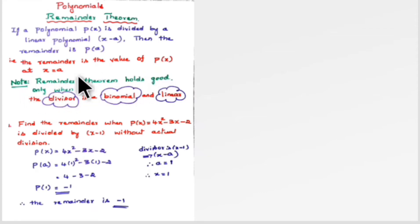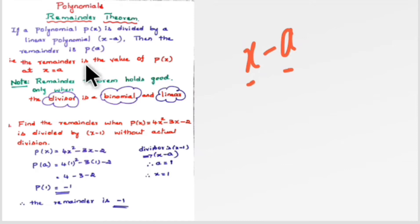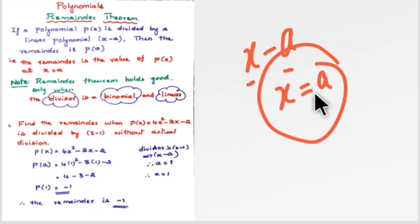Note: the Remainder Theorem holds good only when the divisor is a binomial and linear. Binomial means it must be of two terms — (x minus a) generally — and it is linear. Otherwise you go for the normal actual division method to find the remainder. In the remainder theorem, the remainder is the value of p(x) at x = a. So if divisor is (x minus a), you take x = a and substitute wherever you find x to get the answer directly.